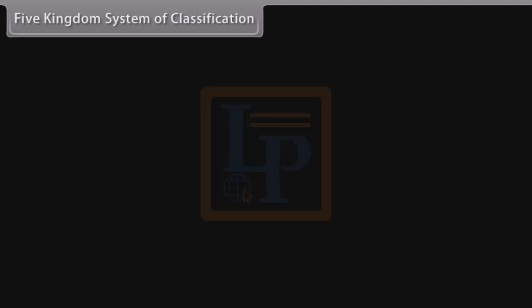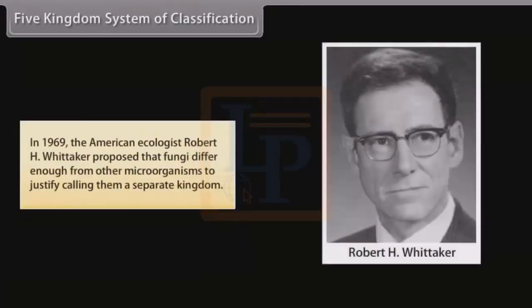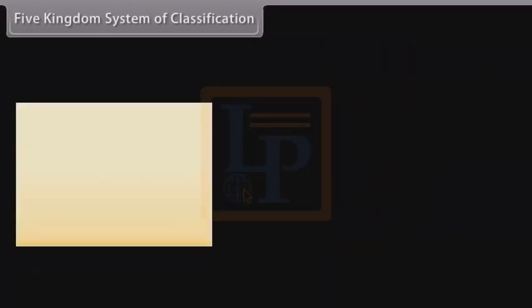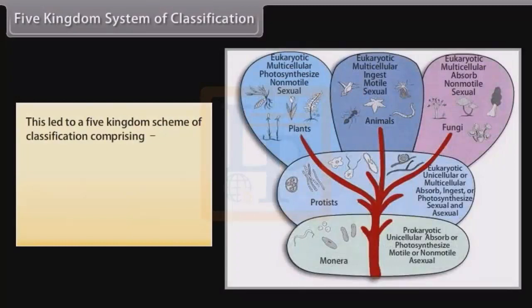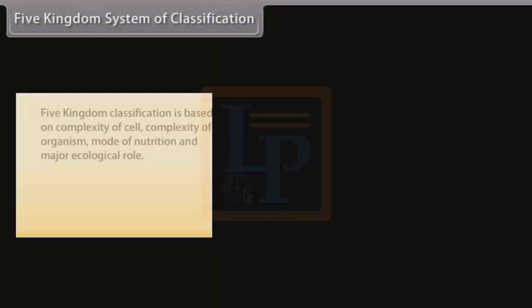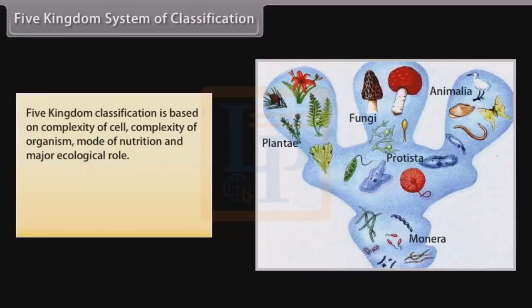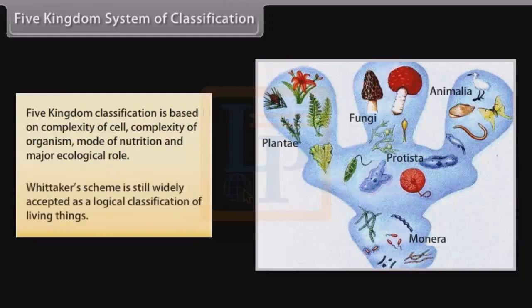Five Kingdoms System of Classification: In 1969, American ecologist Robert H. Whittaker proposed that fungi differ enough from other microorganisms to justify calling them a separate kingdom. This led to a five kingdom scheme comprising Monera, Protista, Fungi, Plantae, and Animalia. This classification is based on complexity of cell, complexity of organism, mode of nutrition, and major ecological role. Whittaker's scheme is still widely accepted as a logical classification of living things.